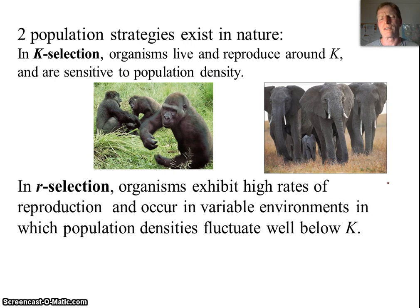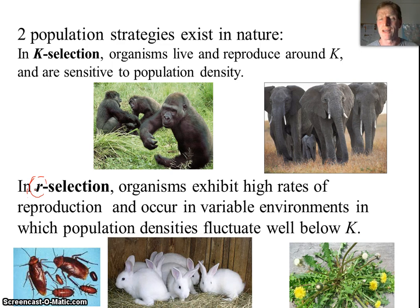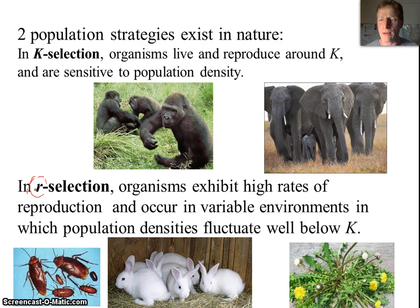The other strategy is called R-selected species — kind of the opposite approach. R means growth, so these are species focused on producing a lot of offspring relatively quickly. Think cockroaches, rabbits, dandelions, weedy plants — they grow really, really fast. A lot of things eat rabbits and roaches, so they suffer high death rates, but as long as some survive, they'll produce lots of offspring and maintain their numbers. R-selection: high reproductive rate, high death rate. K-selection: lower death rates, slower growth, populations maintained closer to carrying capacity.